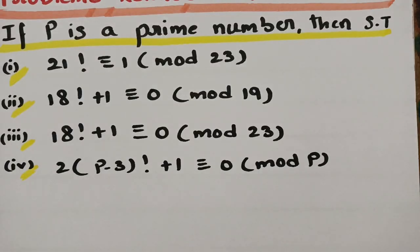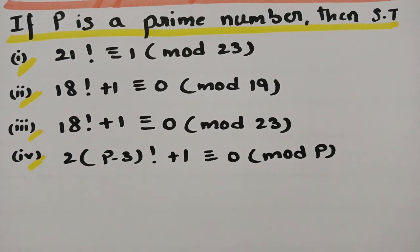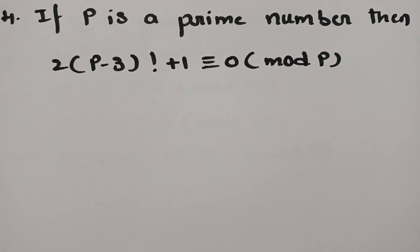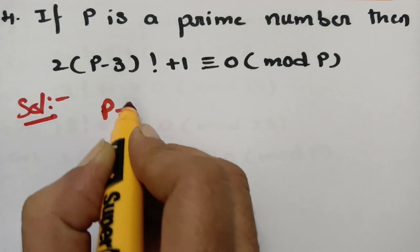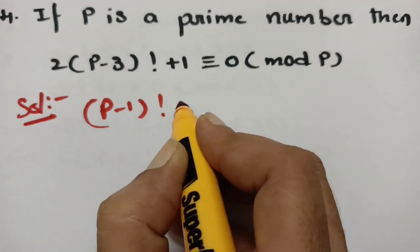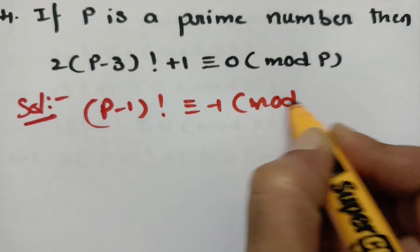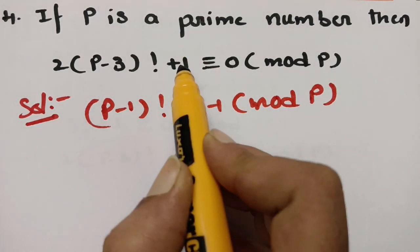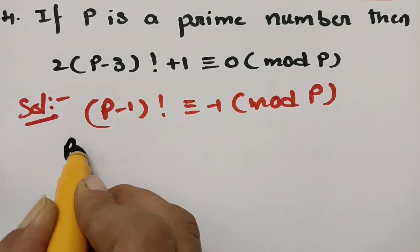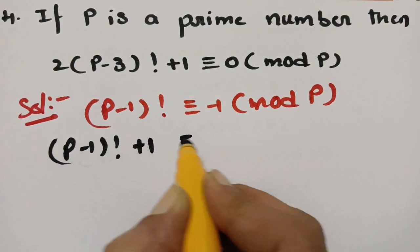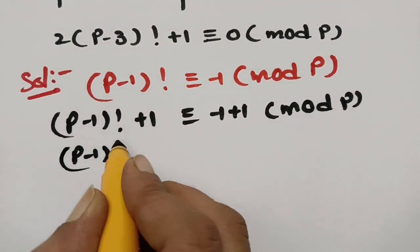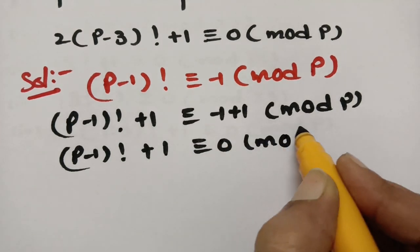The fourth and final question: when P is a prime number, show that 2(P−3)! + 1 ≡ 0 (mod P). This is also simple. According to Wilson's theorem, (P−1)! ≡ −1 (mod P). Adding 1 to both sides: (P−1)! + 1 ≡ 0 (mod P).